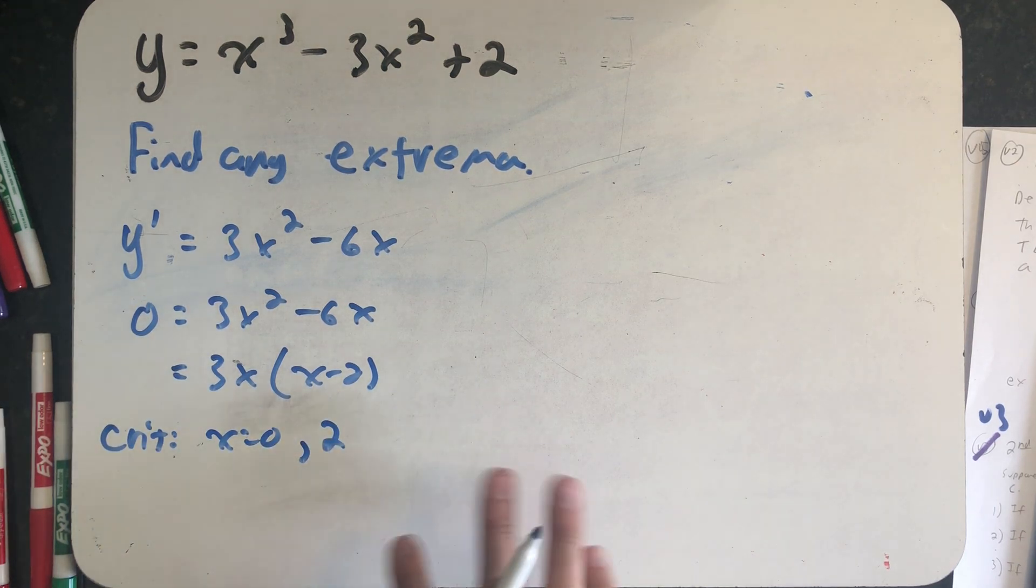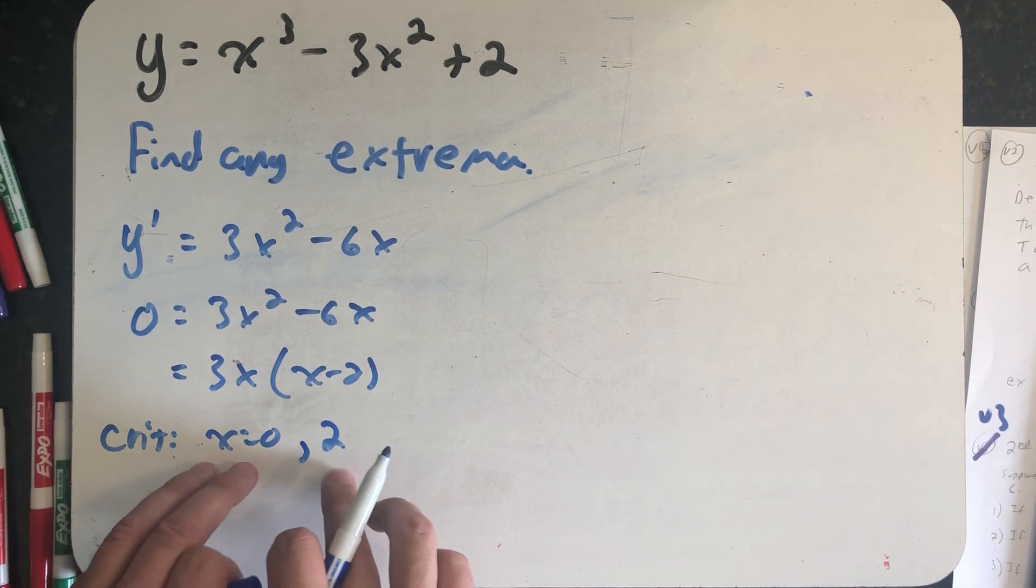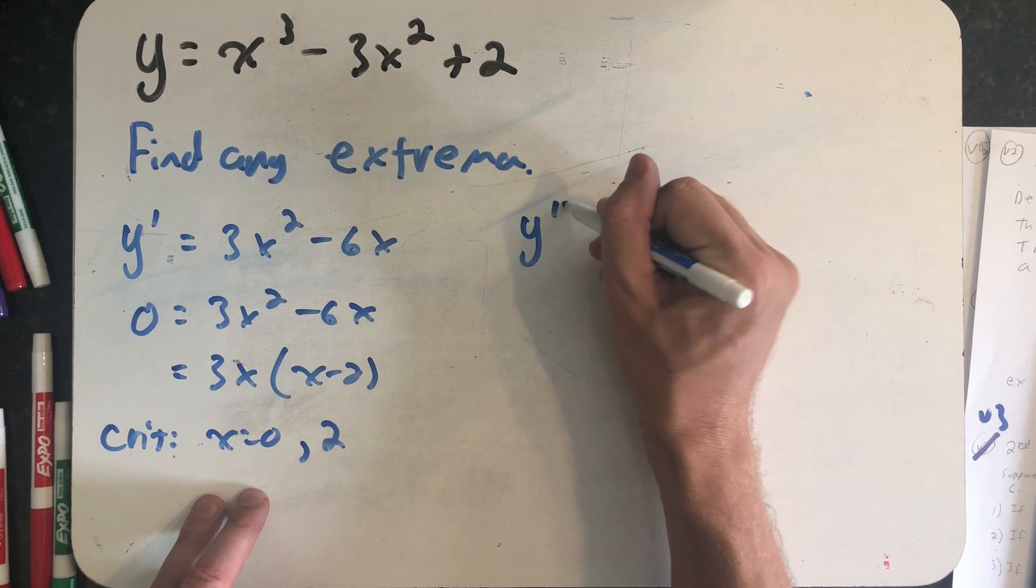So now instead of doing a first derivative test number line, I'm just going to investigate what is true about concavity at these two critical points. So I need a second derivative.